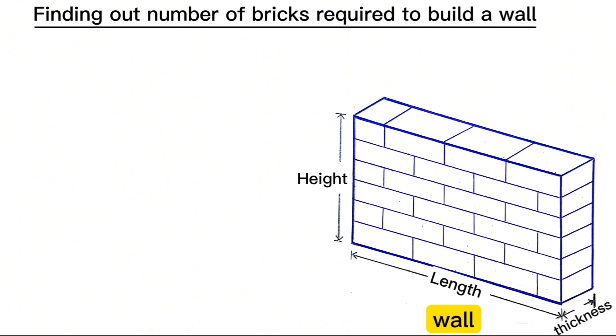And three: the thickness of the wall, which is typically the thickness of the brick depending on the brick bond type. Finding out the number of bricks to build this wall can be done in three easy steps.